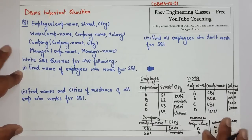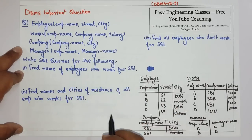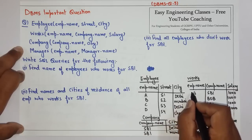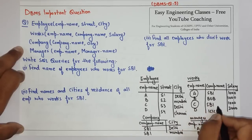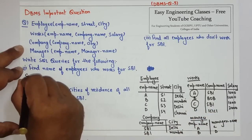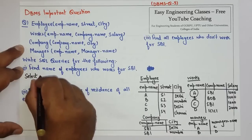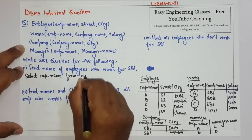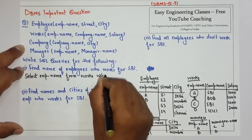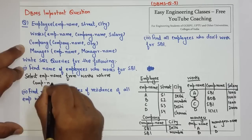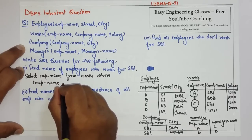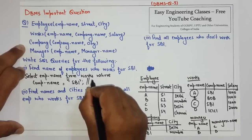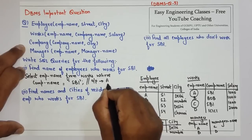The first query is: find the name of employees who work for SBI. From the works relation we can find that there are two employees A and C who work for SBI. So we write: SELECT EMP_name FROM works WHERE company_name = 'SBI'. The output will be A and C.